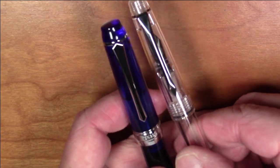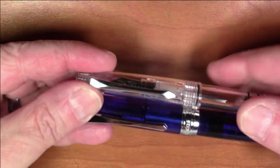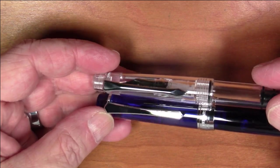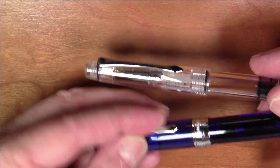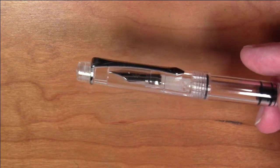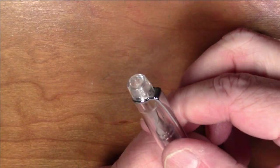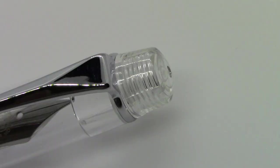So here's a PenBBS 456 and here is the 494, and as you can see it's somewhat evocative of the same style. It's not nearly as heavy, the metal's not nearly as thick and heavy, but it is a functional clip that works just fine. It terminates in a screw off finial on the top of the cap with a clip band to hold the clip on.